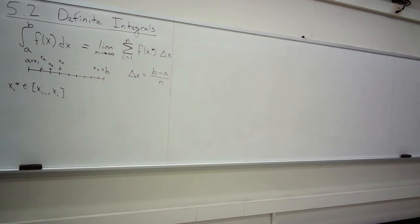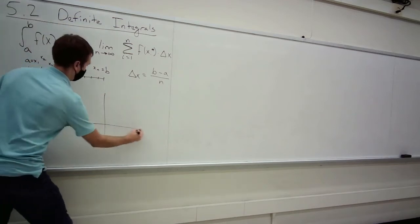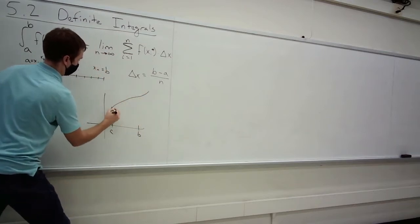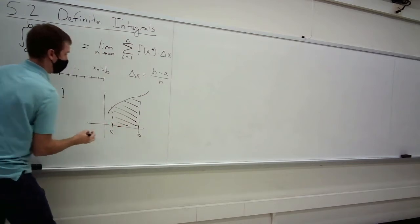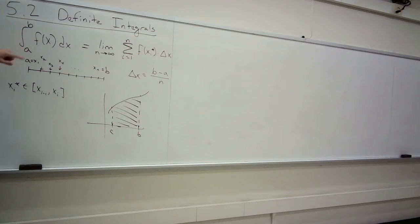That limit sometimes exists, which is great. When it does, we say the definite integral of our function f — the area underneath the function between it and the x-axis from a to b — is defined this way. Just before class I used this symbol without the limits and got something called the indefinite integral, which is essentially the function that tells you the areas. That's a quick recap from last time.